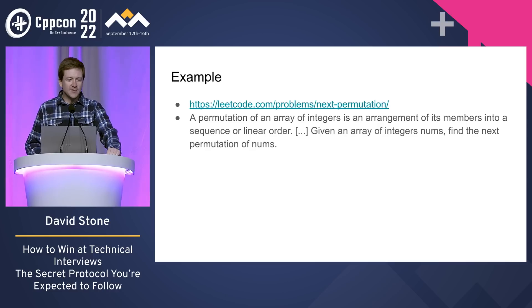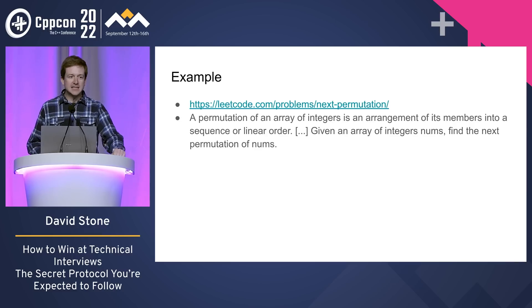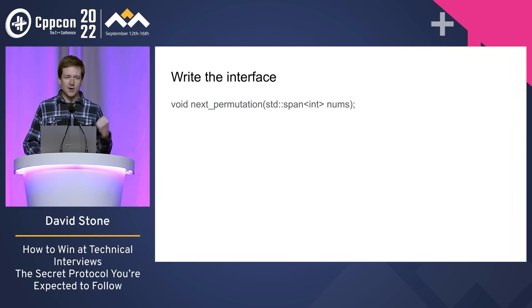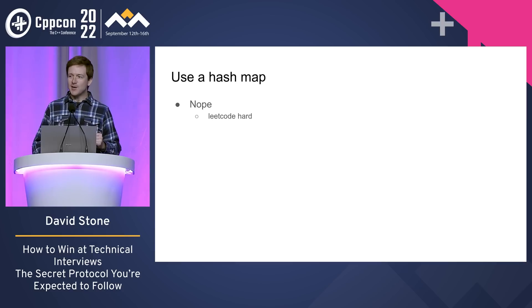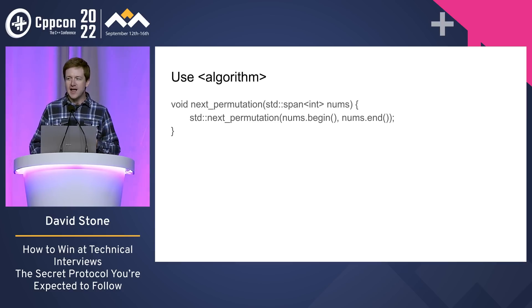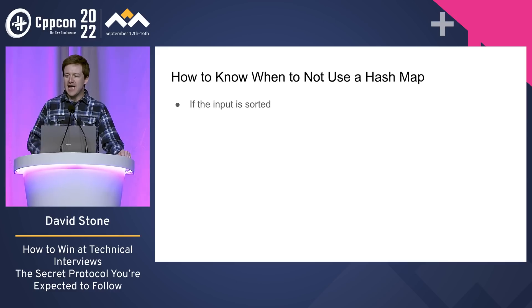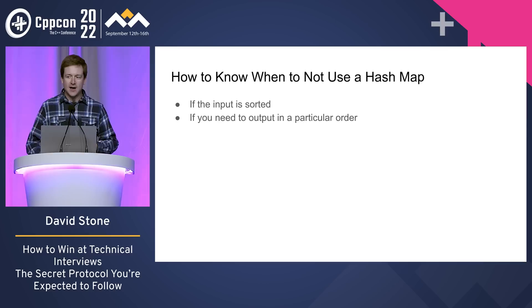Let's look at another question: a permutation of an array of integers is an arrangement of its members into a sequence or linear order. Given an array of integers nums, find the next permutation of nums. This is a LeetCode hard. We write the interface: we accept a span of ints and return nothing, because it modifies in place. Use a hash map? No — LeetCode hard, we can't do that. We fall back on our expert-only solution: use std::next_permutation. There's the answer right there. To know when not to use a hash map: if the input is sorted, that's a clue to use set-based algorithms. If you need to output in a particular order, that's a clue you'll need to sort it. And if we can solve all of the problems this easily, maybe that's a sign that our technical interviews aren't actually testing all the skills that we need.